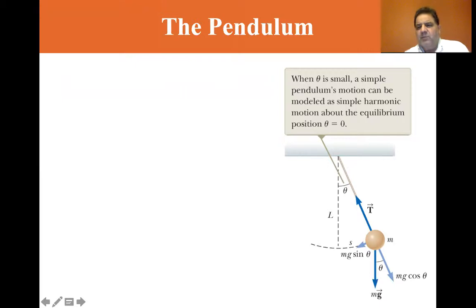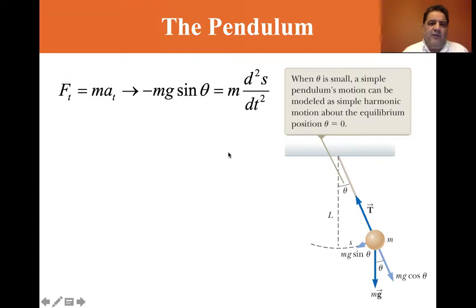For small angles theta, a simple pendulum's motion can be modeled as a simple harmonic motion about the equilibrium position theta equals zero. So we have force equals mass times acceleration. And you can see that acceleration is minus mg sine theta. That's the little vector that's to the side and it's negative because it's towards the theta equals zero side. So mass equals the second derivative of the position vector s.